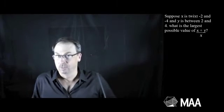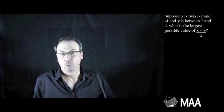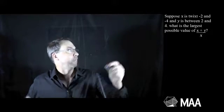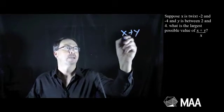Suppose x is twixt negative 2 and negative 4, and y is between 2 and 4. What is the largest possible value of x plus y over x?